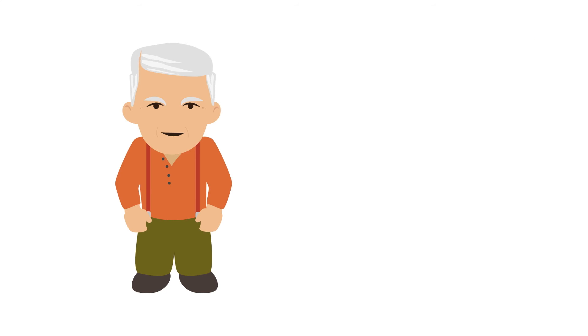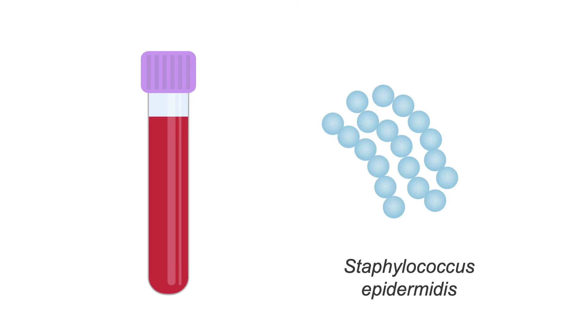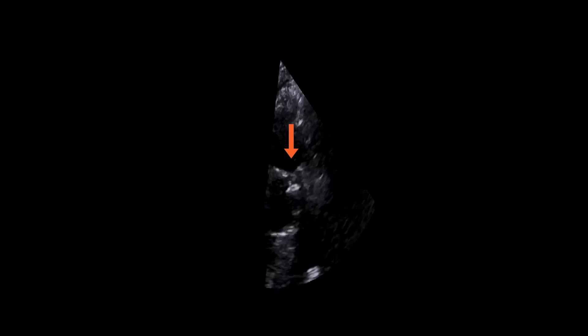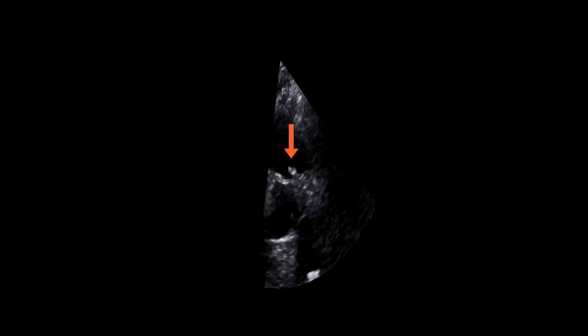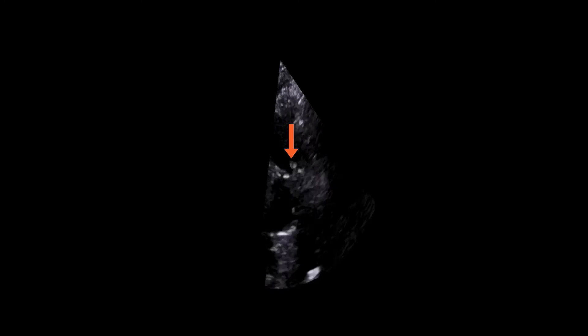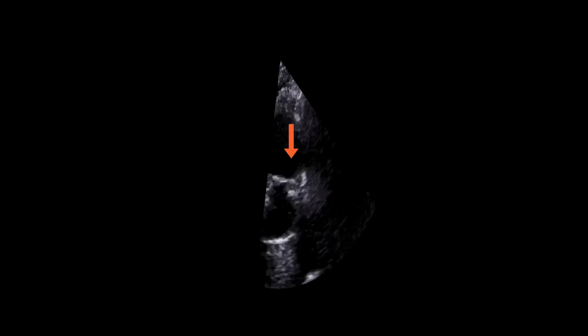This 77-year-old gentleman underwent the Ross procedure to replace his diseased aortic valve with his own pulmonary valve. He was admitted to our center with positive blood cultures for Staphylococcus epidermidis. A large, highly mobile vegetation was present on the pulmonary valve. There were no contraindications for antibiotics, so the patient was given 5 weeks of antibiotic treatment, but they eventually had to be stopped due to signs of kidney damage.